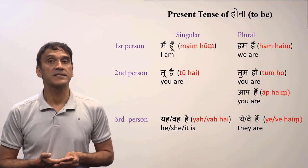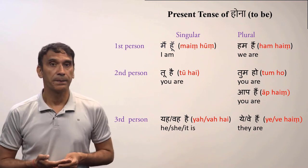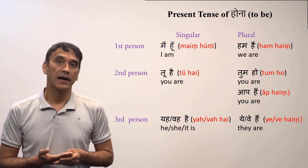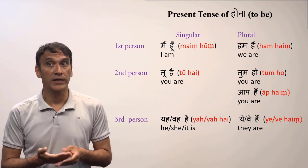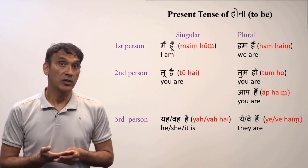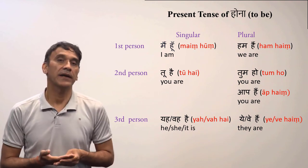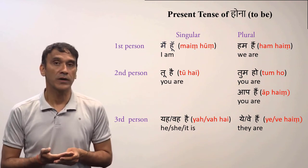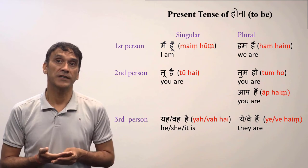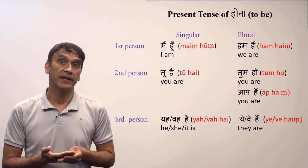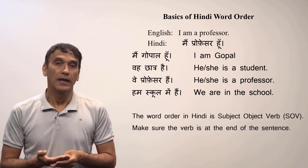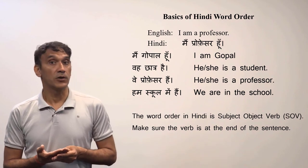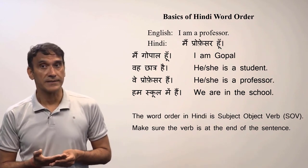Here is the final table for the present tense of the verb HONA: MAIN HU — I am; HUM HAIN — we are; TU HAI — you are (very informal); TUM HO — you are (informal); AAP HAIN — you are (formal); YE HAIN / WO HAIN — he/she/it is; YE HAIN / WO HAIN — they are.